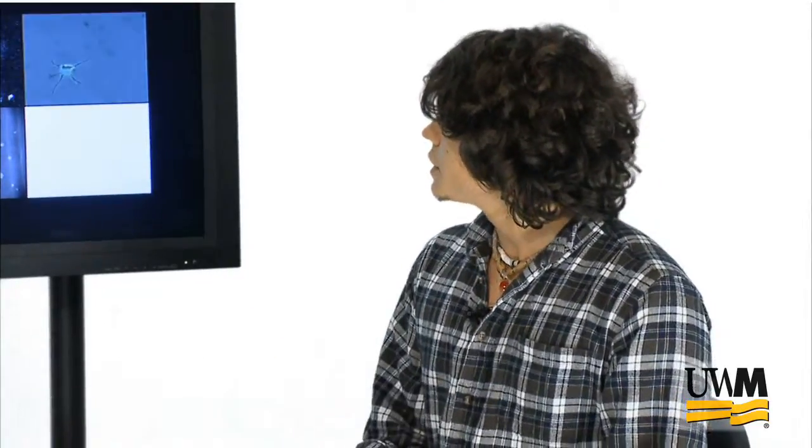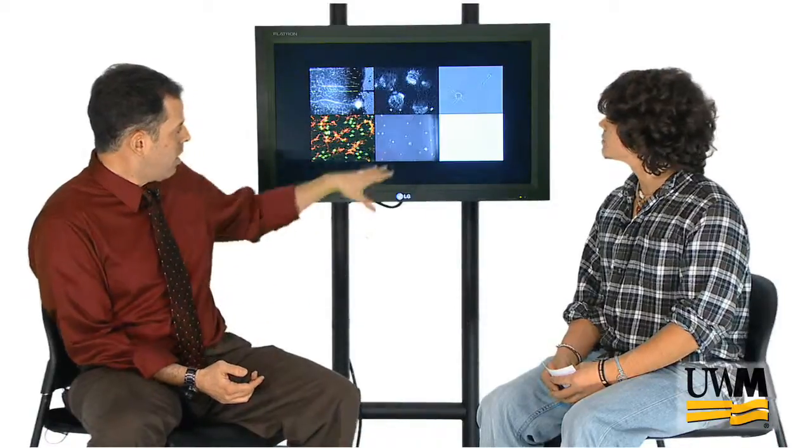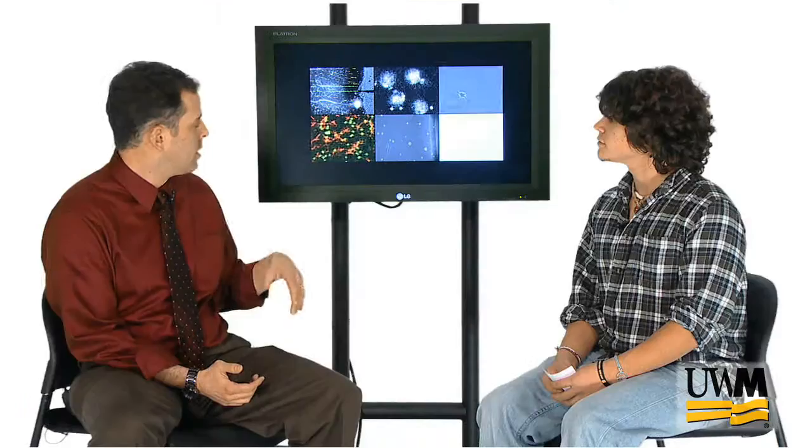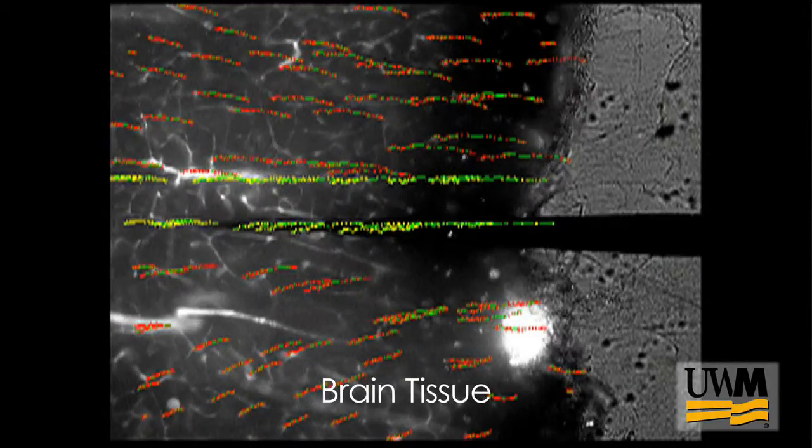Now these videos up here, can you explain some of these? Like what are we seeing right now? So these are all very different biological applications. They were all captured in different labs throughout the country, actually throughout North America. All of them showing live cellular tissue being imaged over time. So in this case we have a neural prosthetic device being inserted into brain tissue.